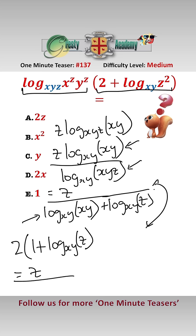gives us z over 1 add log to the base xy of z, times by 2, 1 add log to the base xy of z,